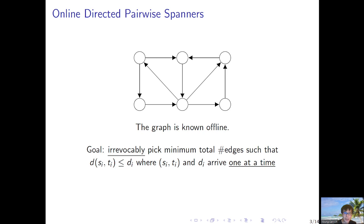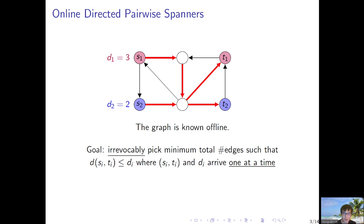For the online setting of this problem, the graph is given offline. Our goal is to irrevocably pick a minimum total number of edges so that the distance from S_i to T_i is at most the target distance D_i, where S_i, T_i, and D_i arrive one at a time. For example, in the first round, S1 to T1 arrives with target distance 2, and we irrevocably pick edges so the distance from S1 to T1 is at most 3. In the second round, S2 to T2 arrives with target distance 2, and we pick edges so the distance from S2 to T2 is at most 2.